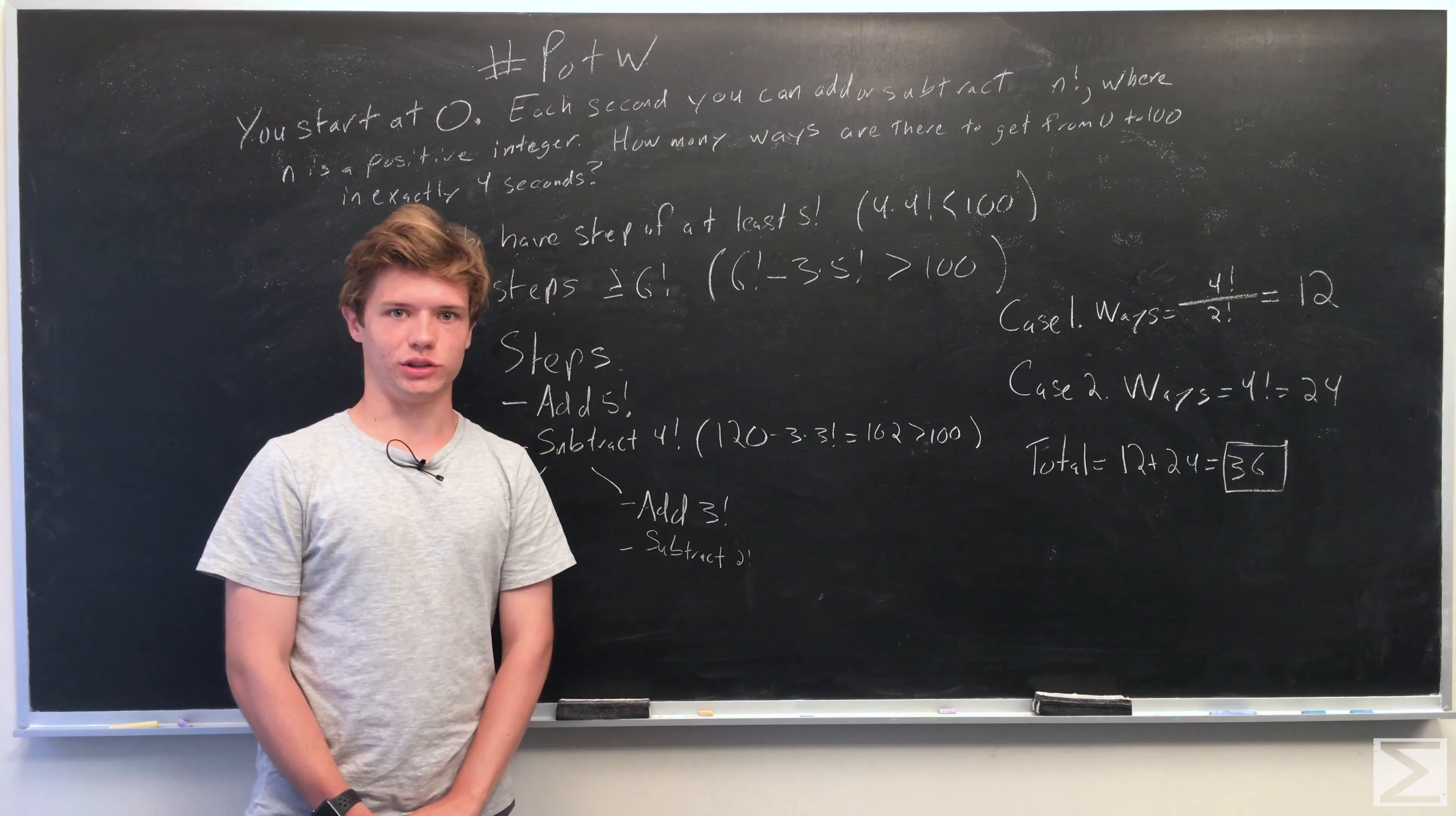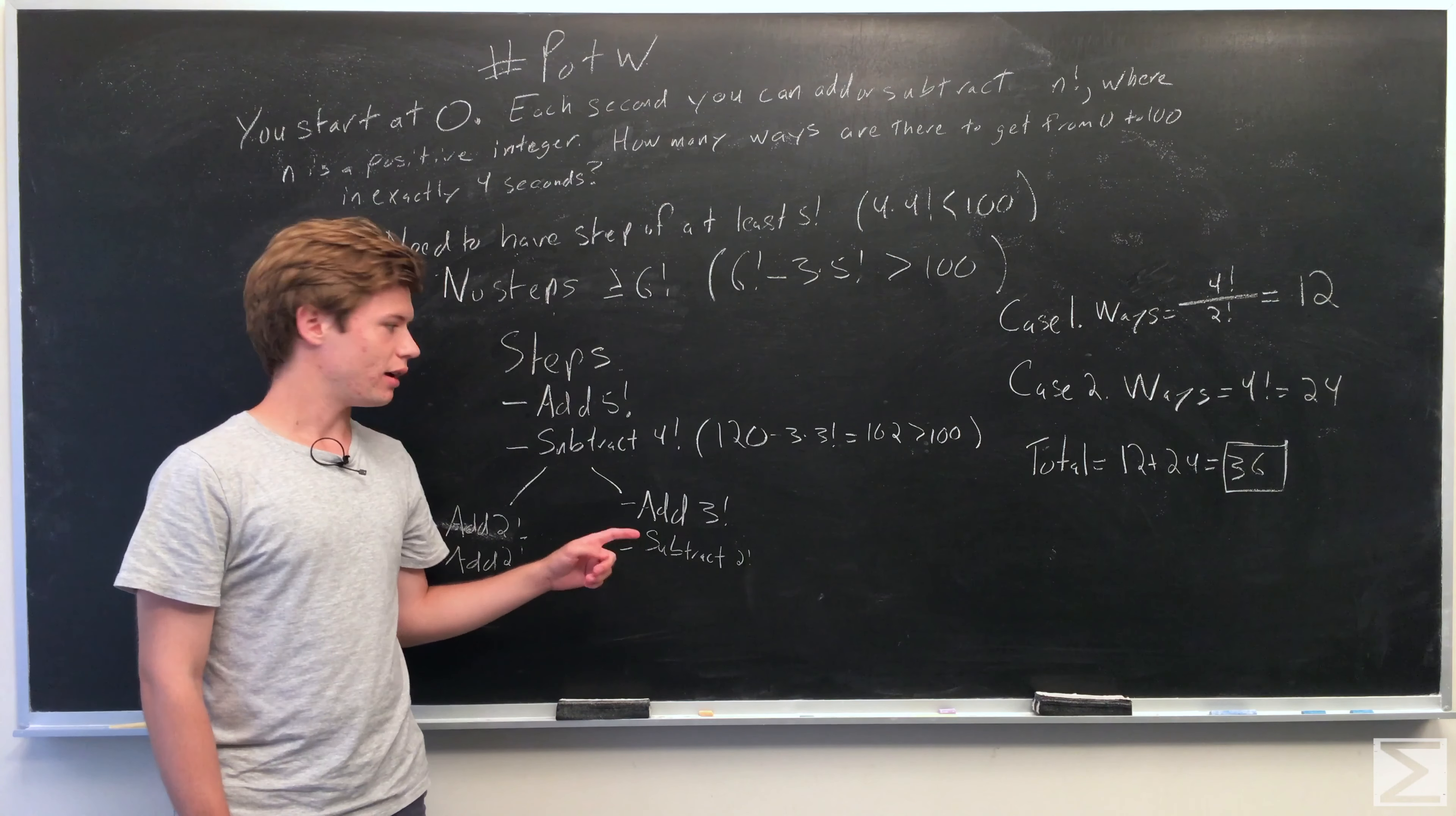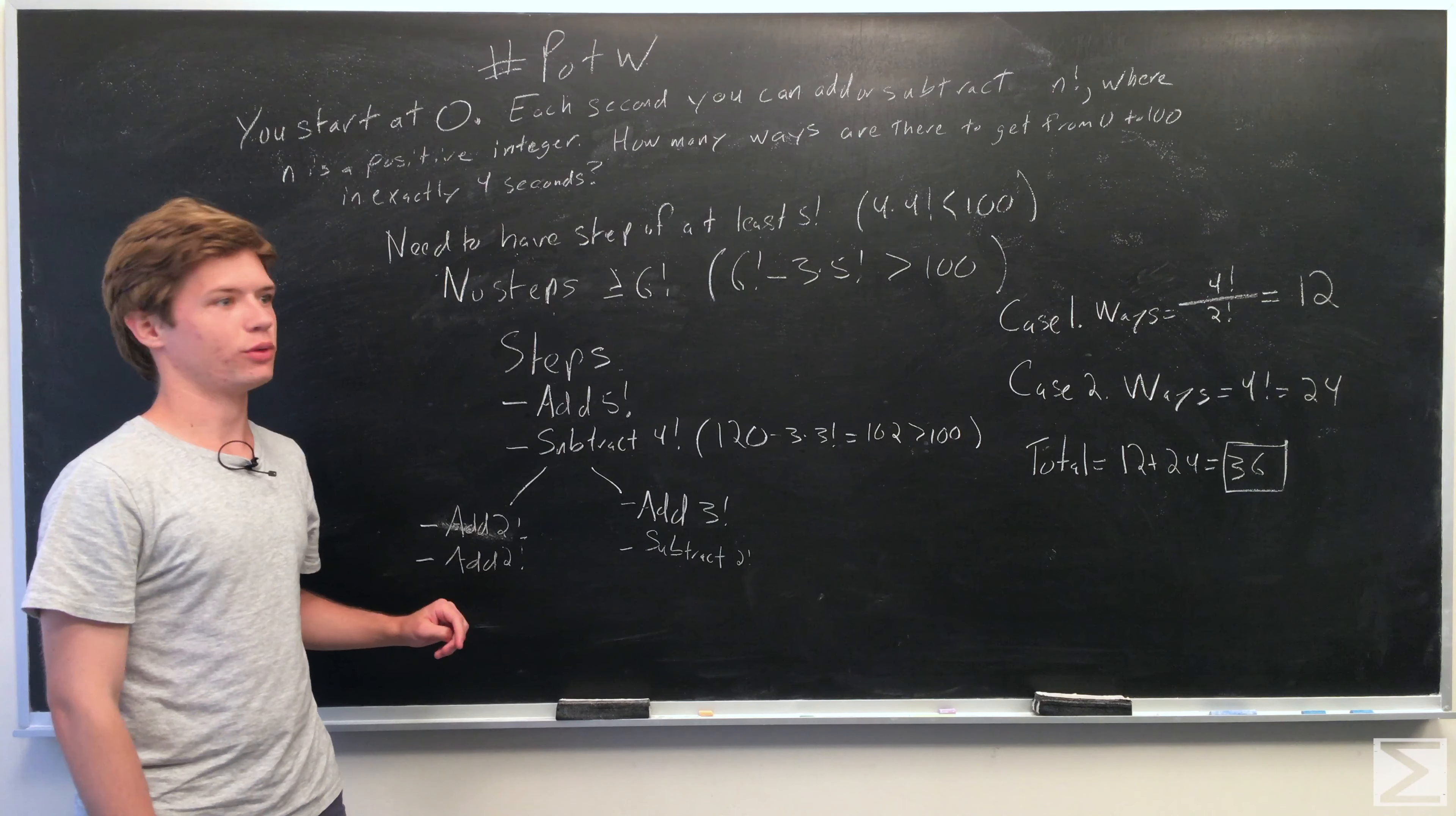There are two possible ways you can go about this. You can either add 3 factorial and subtract 2 factorial (6 minus 2 is 4), or you can add 2 factorial twice (2 plus 2 is 4).